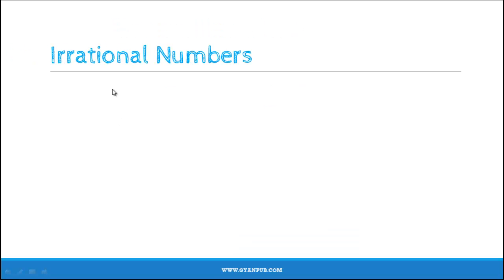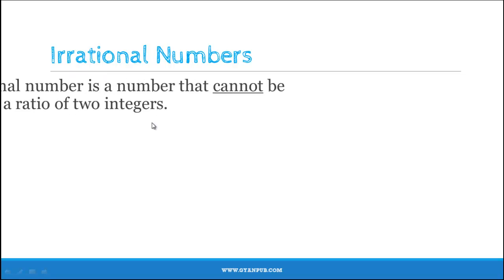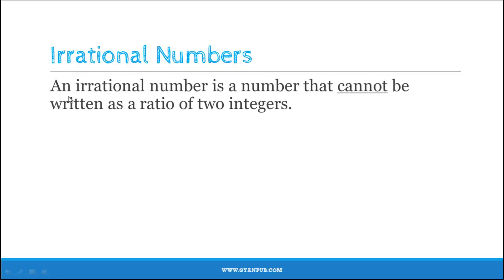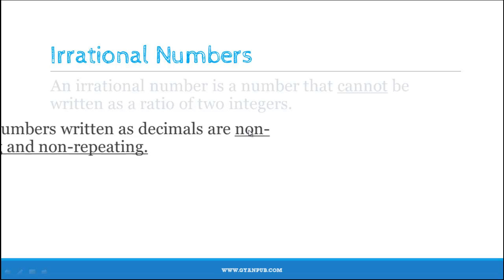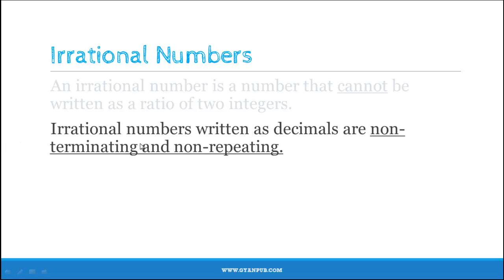Now let us move on to irrational numbers. The definition is: an irrational number is a number that cannot be written as a ratio of two integers. Irrational numbers written as decimals are non-terminating and non-repeating.